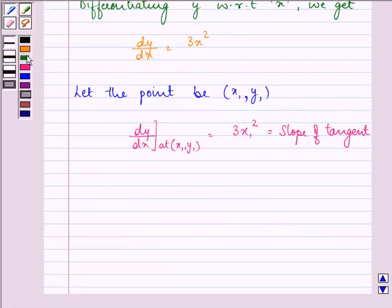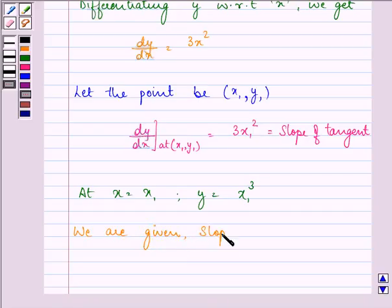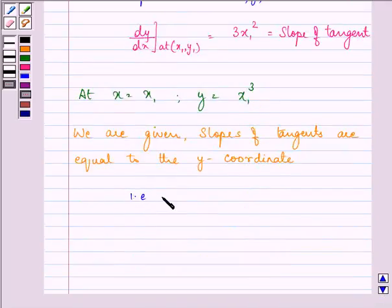So at x = x₁, y = x₁³. Now we are given in the question that slopes of tangents are equal to the y-coordinate. That is, 3x₁² = x₁³.